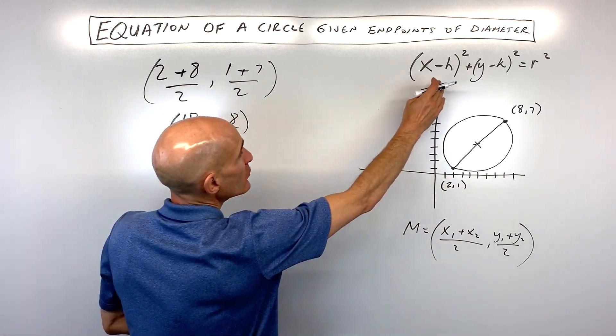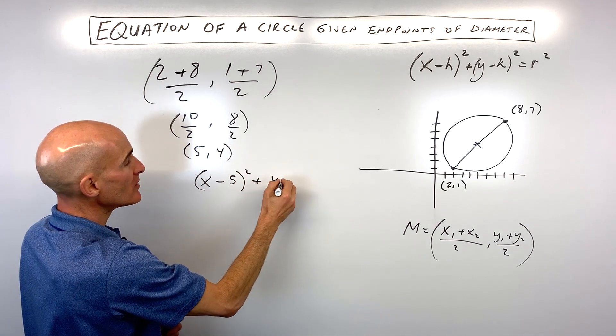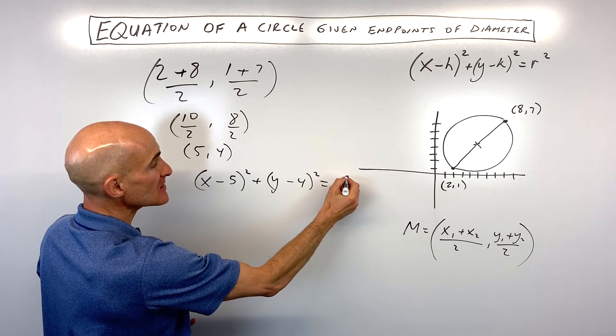Now what we want to do is go ahead and put that in for H and K. So that's going to be X minus 5, the quantity squared, plus Y minus 4, the quantity squared, equals the radius squared.